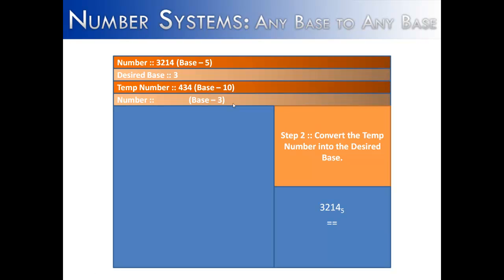Now that we know what the number is in base 10, we can use the ladder method to figure out what 434 in base 3 is. So we take the desired base and divide it into the number.